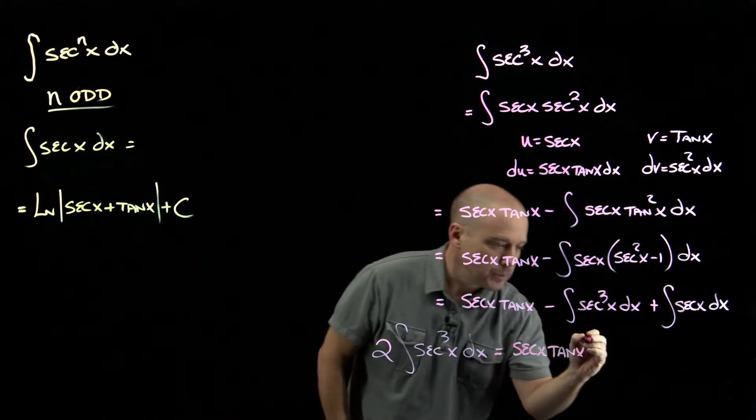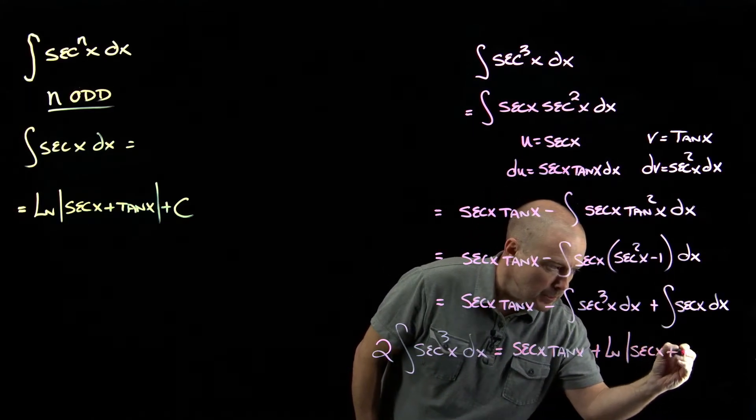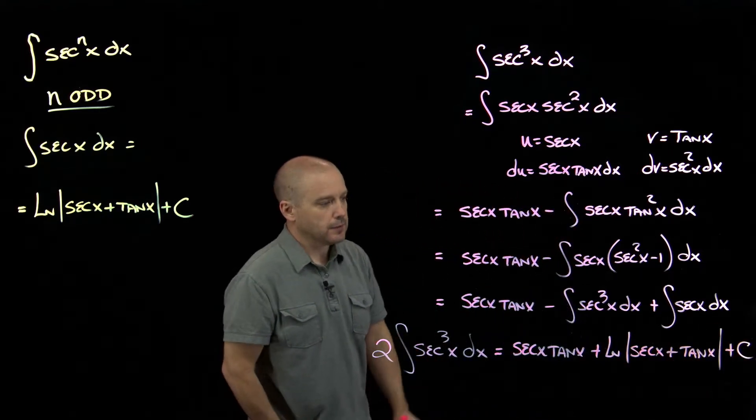And then on the other side we have that secant x tangent x, and then we have this integral of secant, which we know to be natural log absolute value of secant plus tangent, plus our constant.